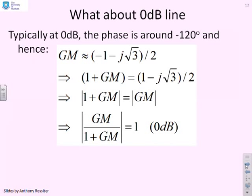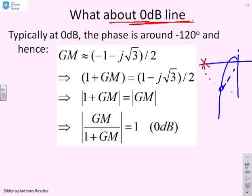What about the 0dB line? Can we do the same sort of trick with 0dBs? If I do a sketch here, put in my minus 1 point, put in my unit circle, then typically for a well-tuned Nyquist, we're talking about angles here of around 60 degrees when the gain is 1. Therefore, if I do this point here as a complex number, I get this minus 1 minus j root 3 over 2.